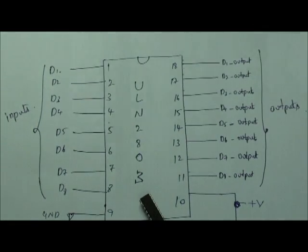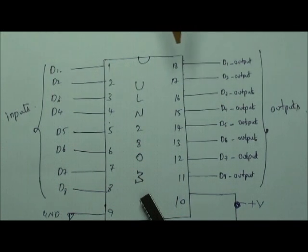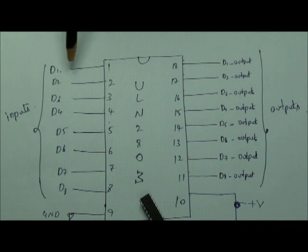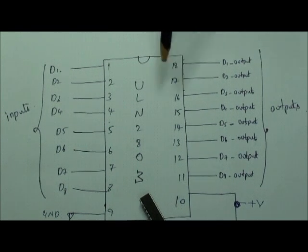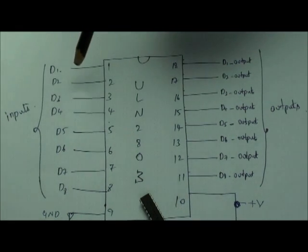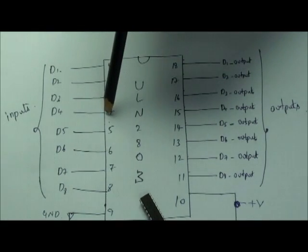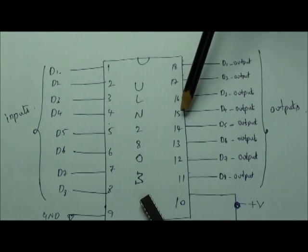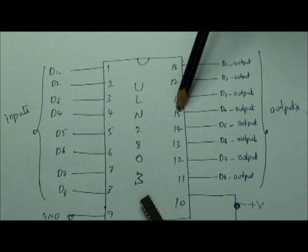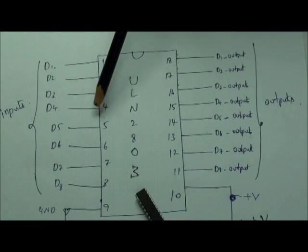There is an important note: if you give the supply to the D1 input you should take the output from the D1 output. That is, if you are supplying the input at pin number 1, you should take the output at exactly the opposite side, that is pin number 18. If you are making use of pin number 4 as an input, then you need to take exactly the opposite — that is pin number 15 — as an output.